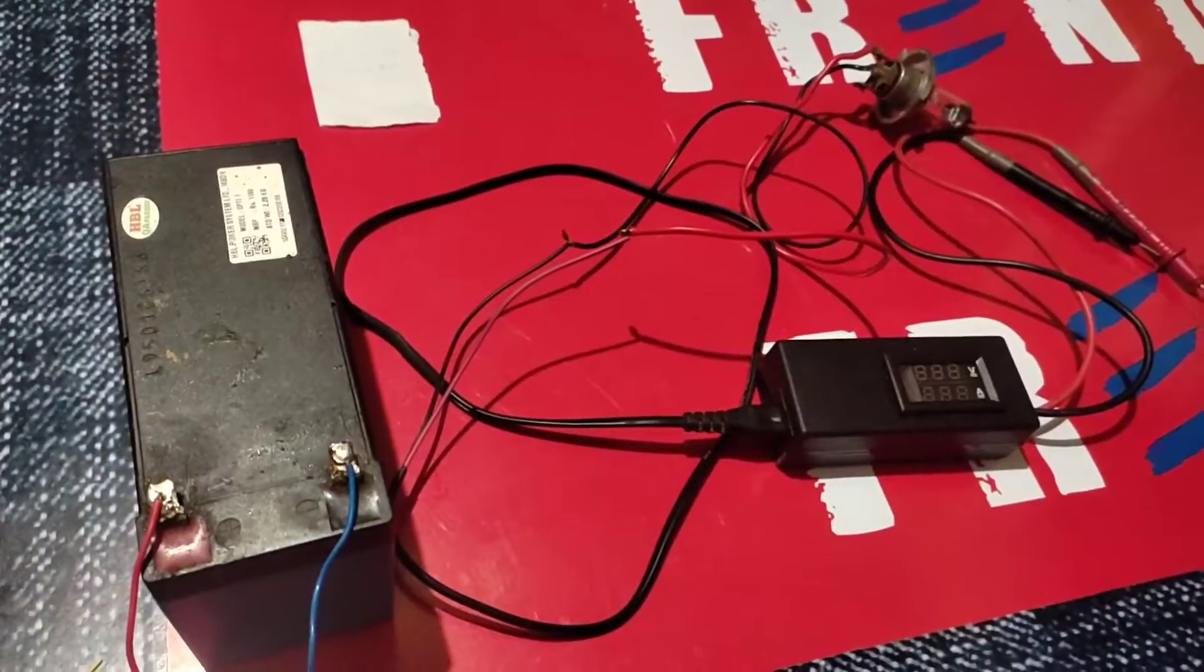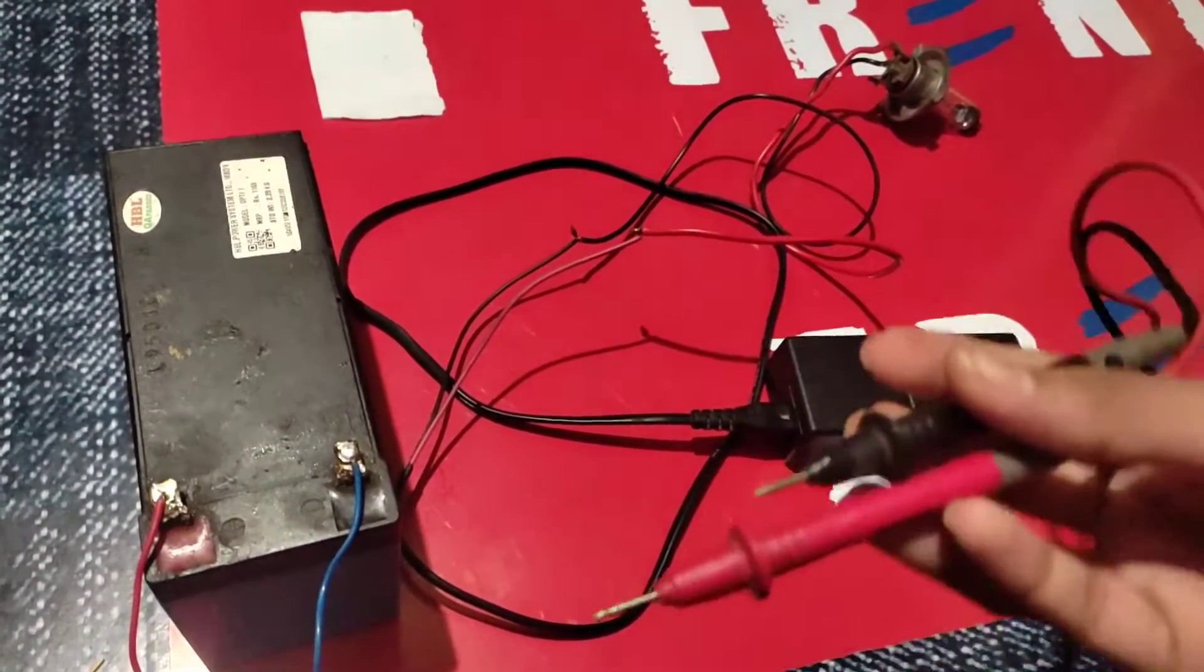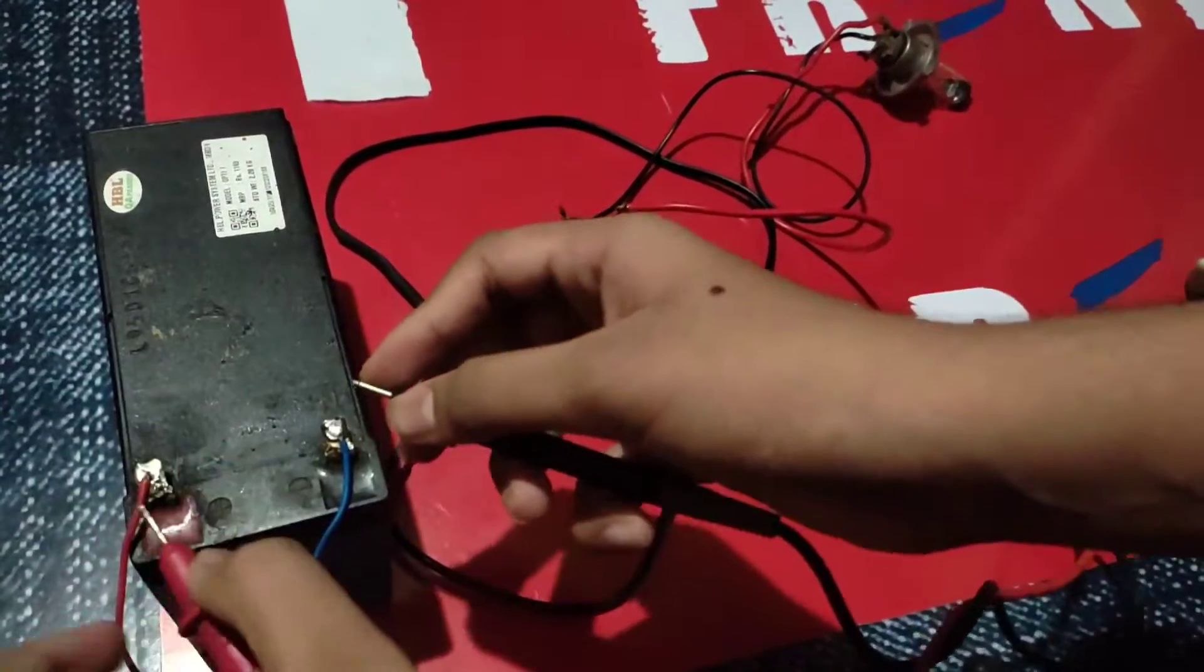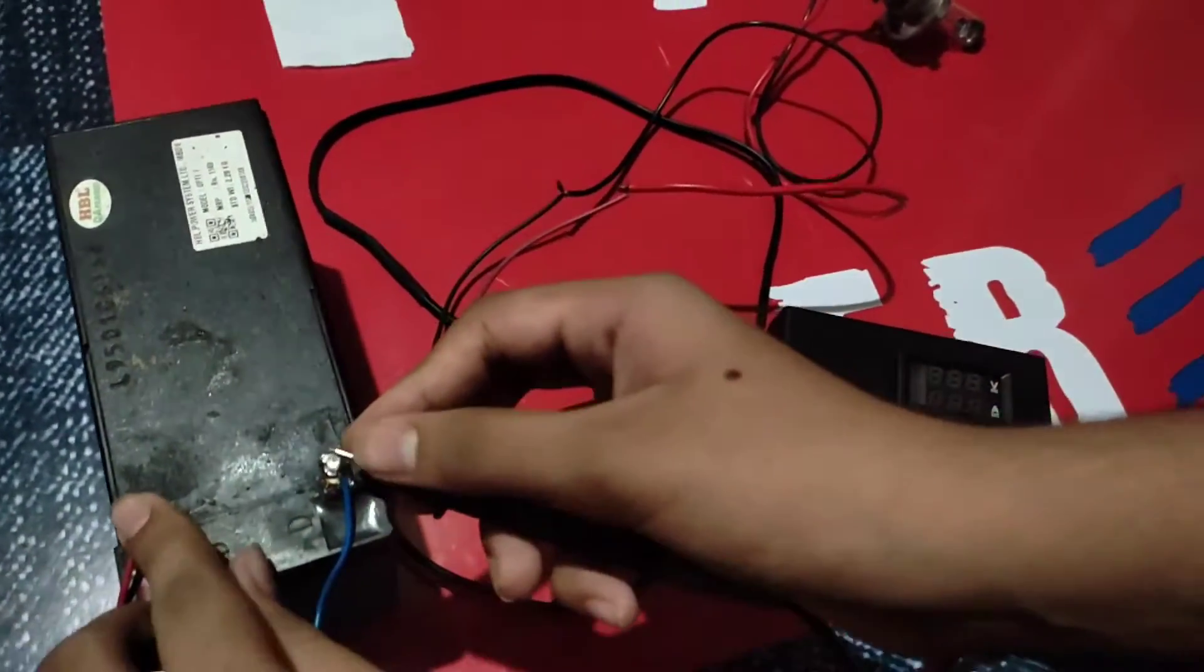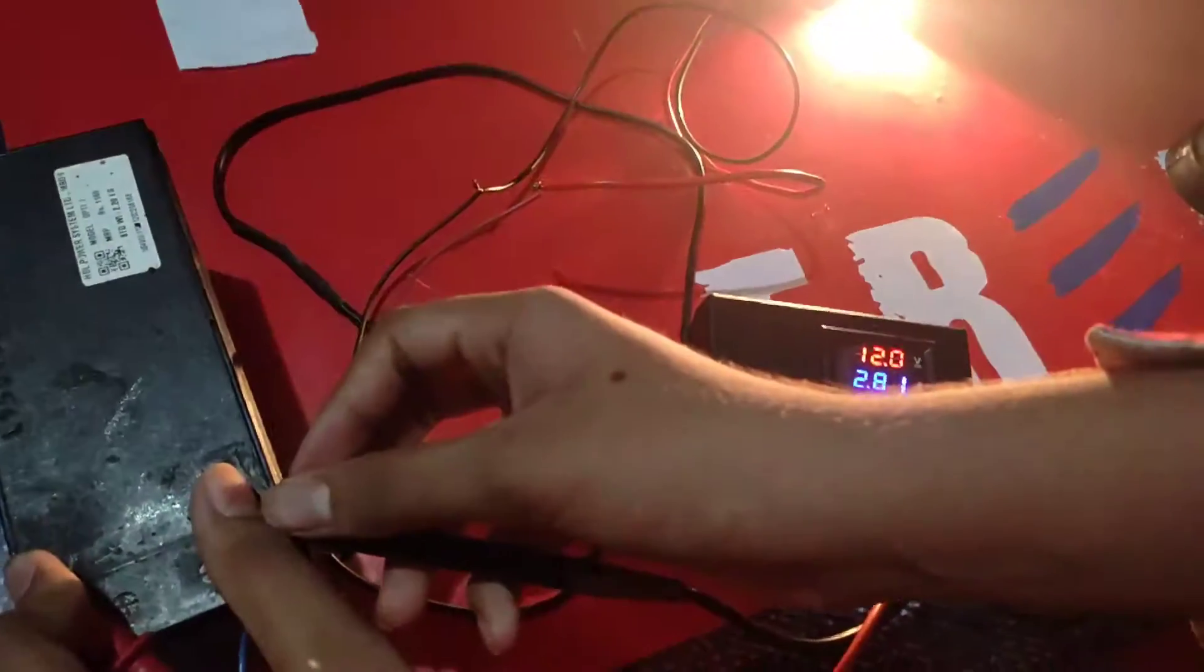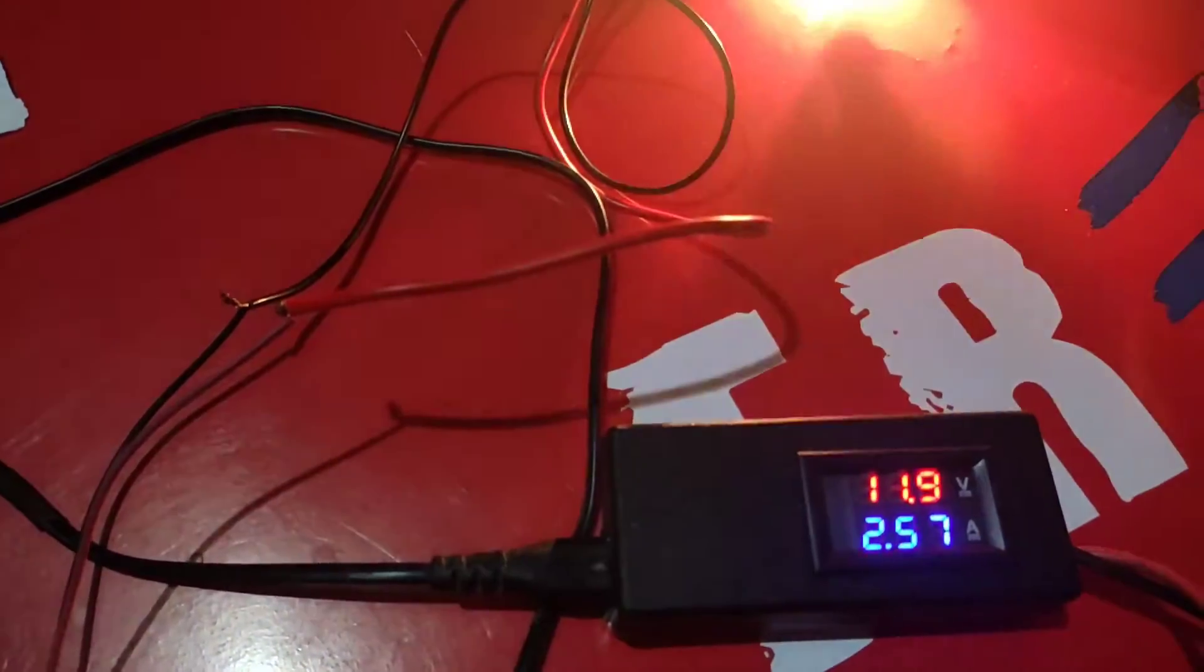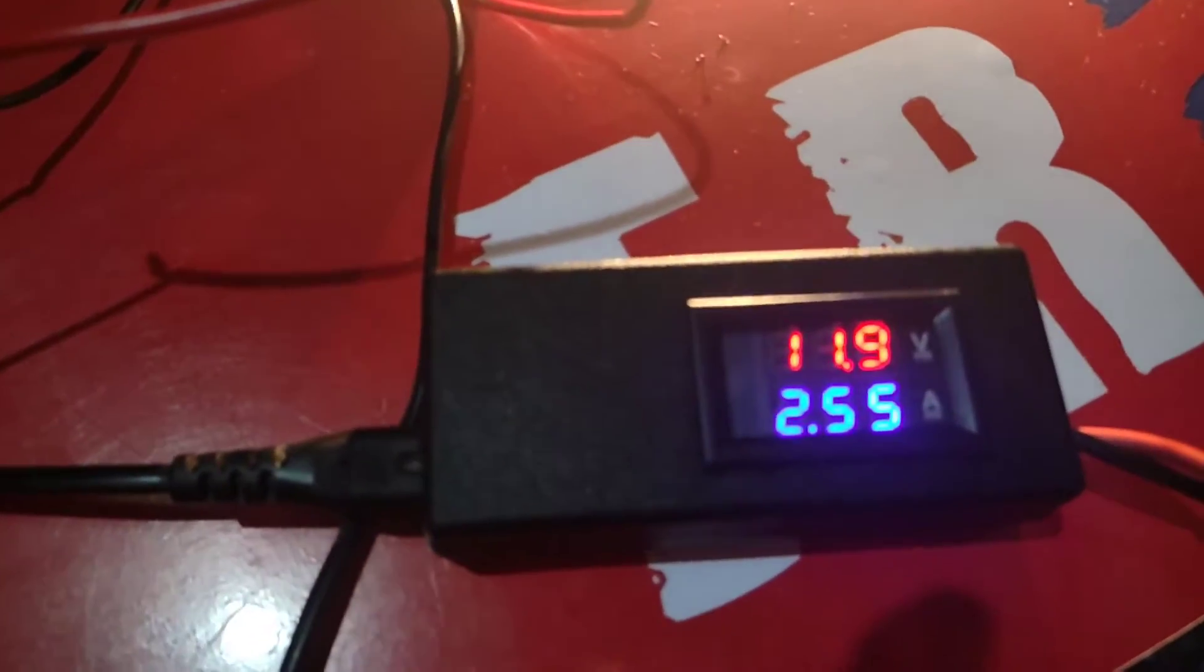Plus to plus and minus to minus. Now we have to keep the main wires to the battery. Like that you have to keep. You can see the bulb started glowing and you can see the ampere, the volts and amps that the bulb takes from the battery.